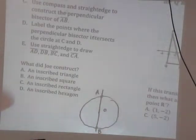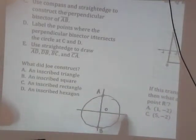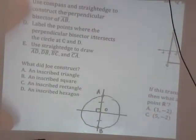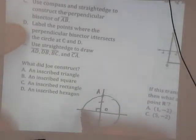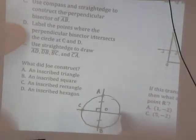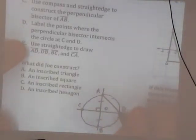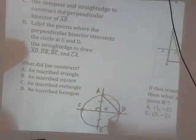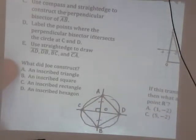He uses a compass and straight edge to construct the perpendicular bisector of AB. So he takes AB, cuts it in half, bisects it, and draws a perpendicular line through it. 90 degrees. So this equals this. And then it says, he labels the points where the perpendicular bisector intersects the circle at C and D. So he labels them C and D. And then he uses a straight edge to draw AD, DB, BC, and CA.